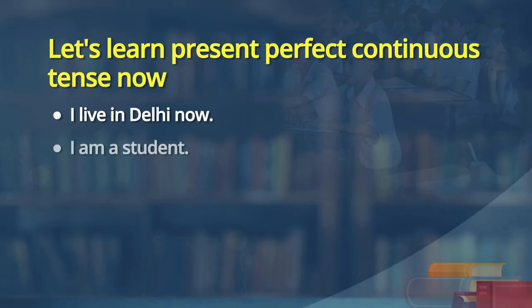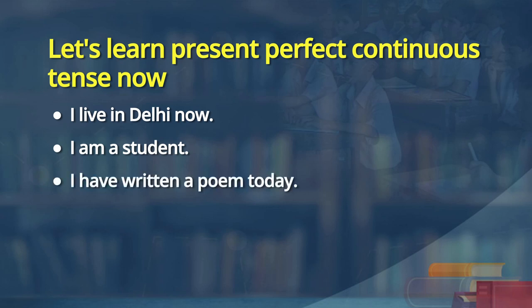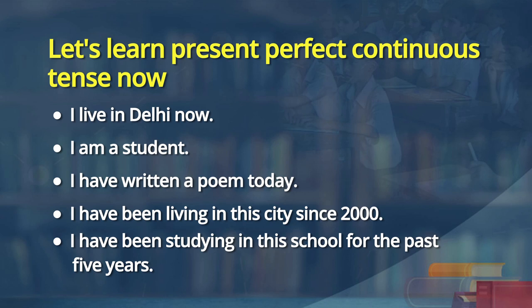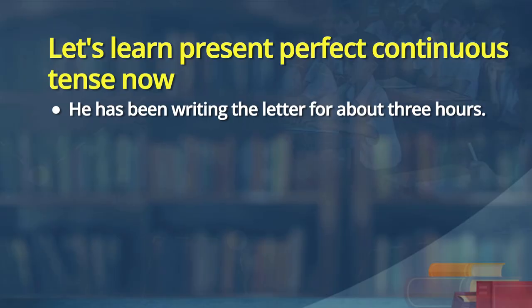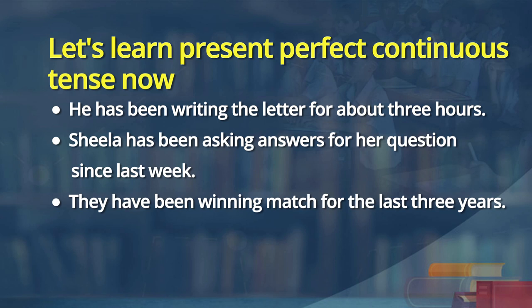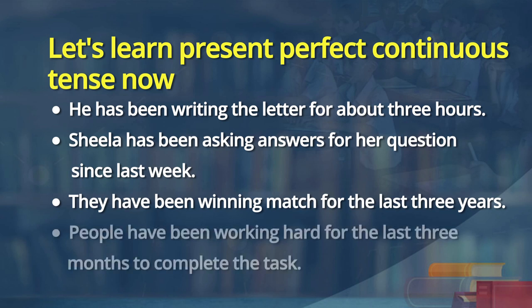Here are the sentences for you, learners. Let us read the following sentences: I live in Delhi now. I am a student. I have written a poem today. I have been living in this city since 2000. I have been studying in this school for the past five years. He has been writing the letter for about three hours. Sheila has been asking answers for her question since last week. They have been winning matches for the last three years. People have been working hard for the last three months to complete the task.